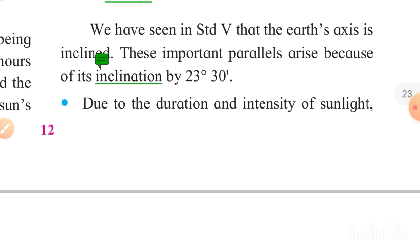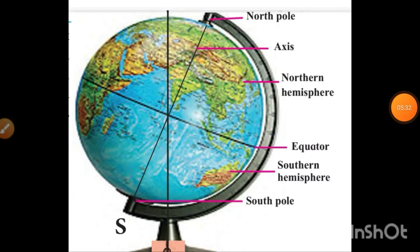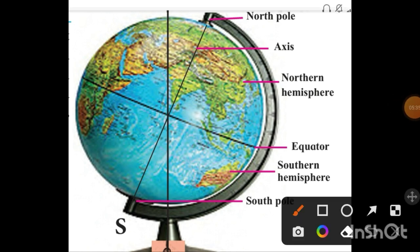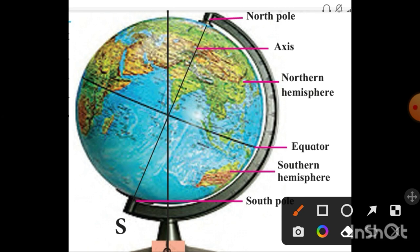As we learned in standard fifth, the earth's axis is inclined at 23 degrees 30 minutes. To understand this, look at this globe — it is not placed in a straight way; it is placed in a tilted way. If we were to place the globe straight, the top of the globe would be here.